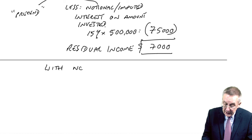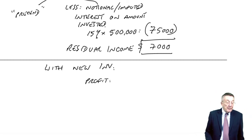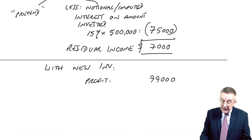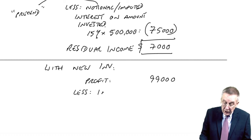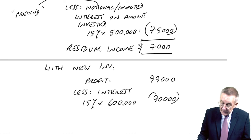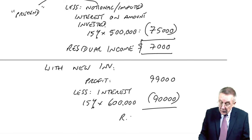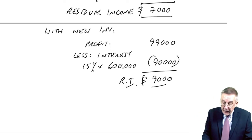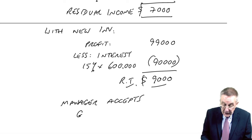With the new investment, the profit goes up — it was £82,000, it goes up by £17,000 to £99,000. However, because there's been new investment, this notional interest figure will go up as well — 15% of the new total of £600,000 goes up to £90,000. The residual income is £99,000 minus £90,000 = £9,000. It's gone up, so it's good for the manager. The manager accepts, and it is goal congruent.